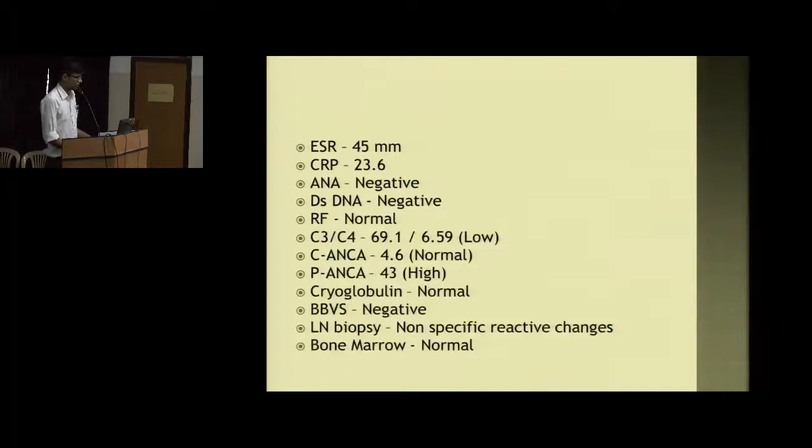An inflammatory panel showed elevated ESR and CRP and low complements. The rest of the things were normal. He had normal ANA, dsDNA, cryoglobulins, and BBVS was negative. Bone marrow biopsy was normal and lymph node biopsy was also normal.